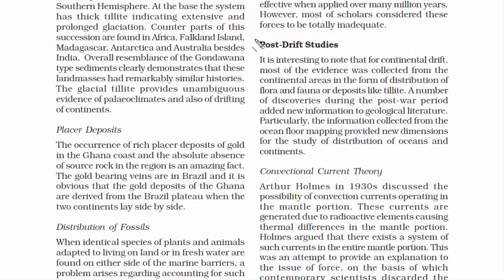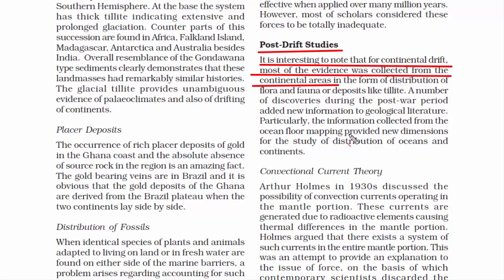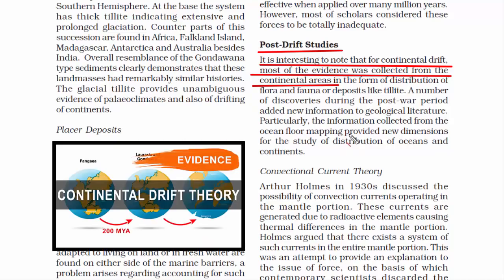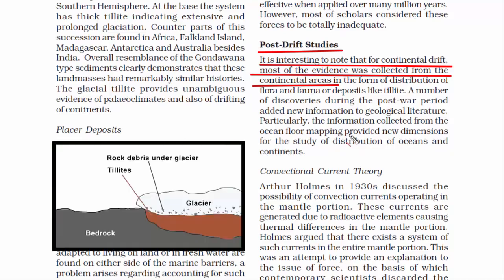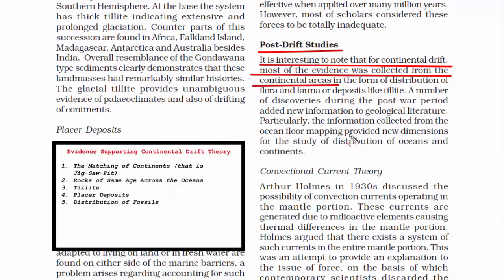Now we are going to read about post-drift studies, meaning after the rejection of Wegener's Continental Drift Theory, there was more research done to explore unknown avenues left unexplored. The problem with Wegener's theory was that the evidence was completely focused on landmass — things like distribution of fossils of flora and fauna, or deposits like tillite. So all these evidences were focused towards landmass.